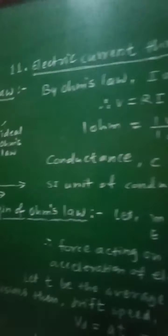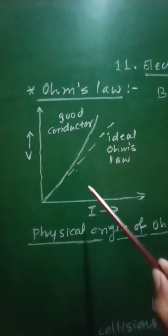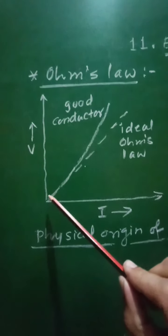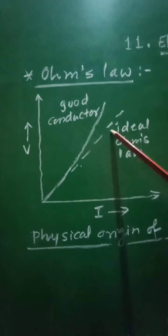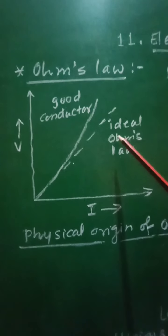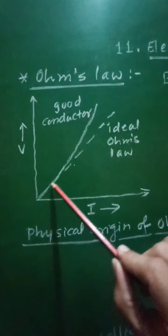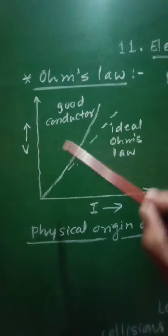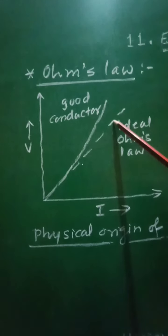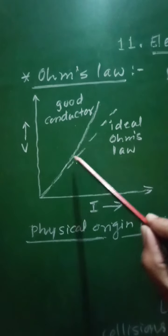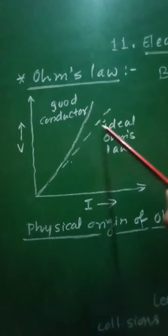If we plot the graph of potential difference versus current for a conductor, the graph for ideal Ohm's Law is a straight line passing through the origin. However, in practice, for a good conductor the graph is not a straight line but a curve, as shown in the figure. The dotted line represents ideal Ohm's Law.